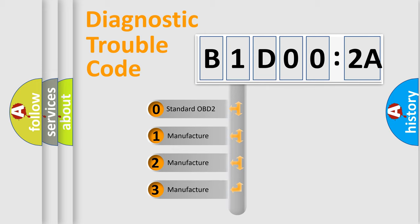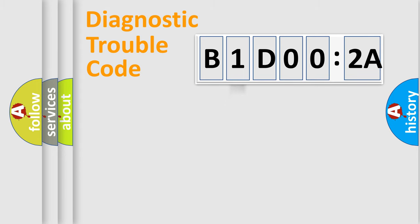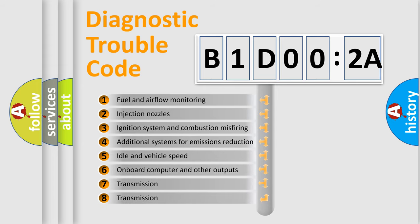If the second character is expressed as zero, it is a standardized error. In the case of numbers 1, 2, 3 it is a more precise expression of the car-specific error.